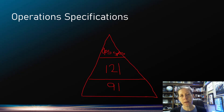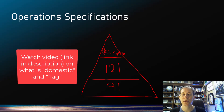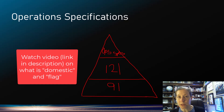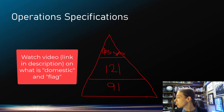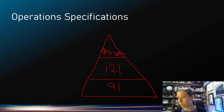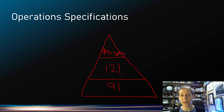For example, in Part 121 domestic operations and Part 121 flag operations — I'll link to a video explaining those in the description — there are different fuel requirements, but those air carriers have to have a list of airports they can go to. That list is not found in Part 121 itself, because American goes to different airports than Delta, which goes to different airports than Southwest. Each of those airlines has their own list in their operations specifications.